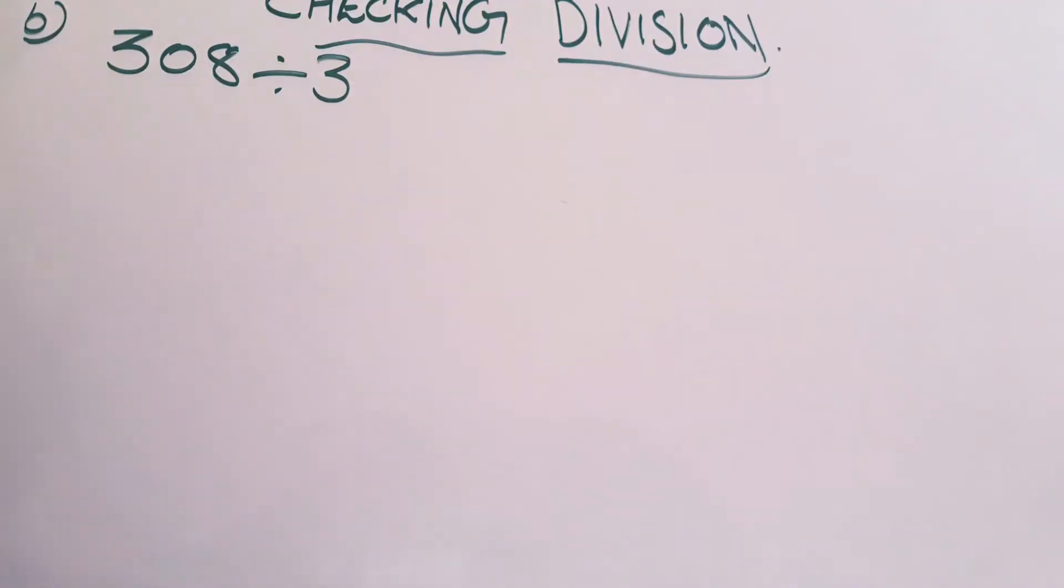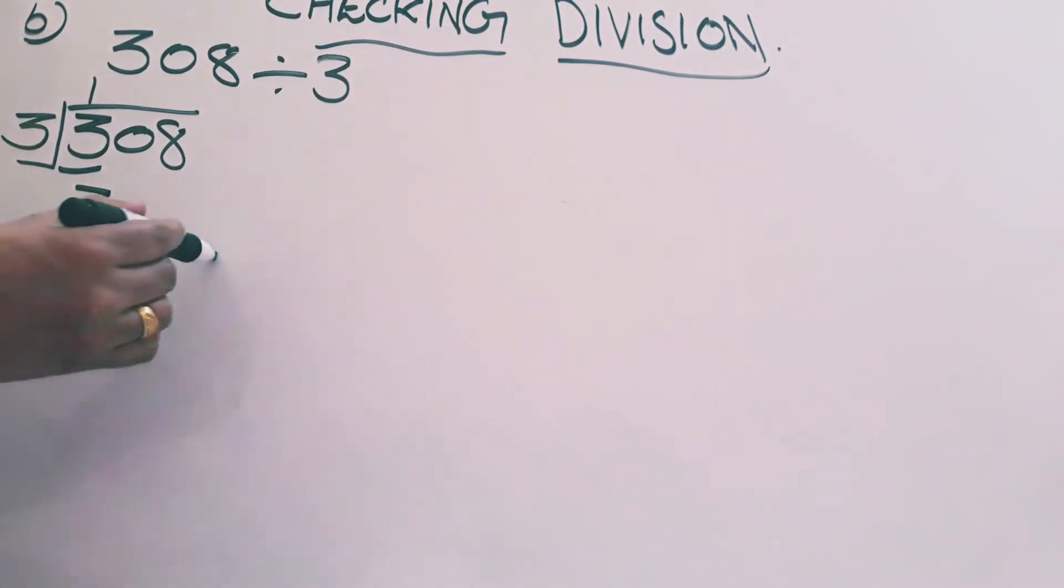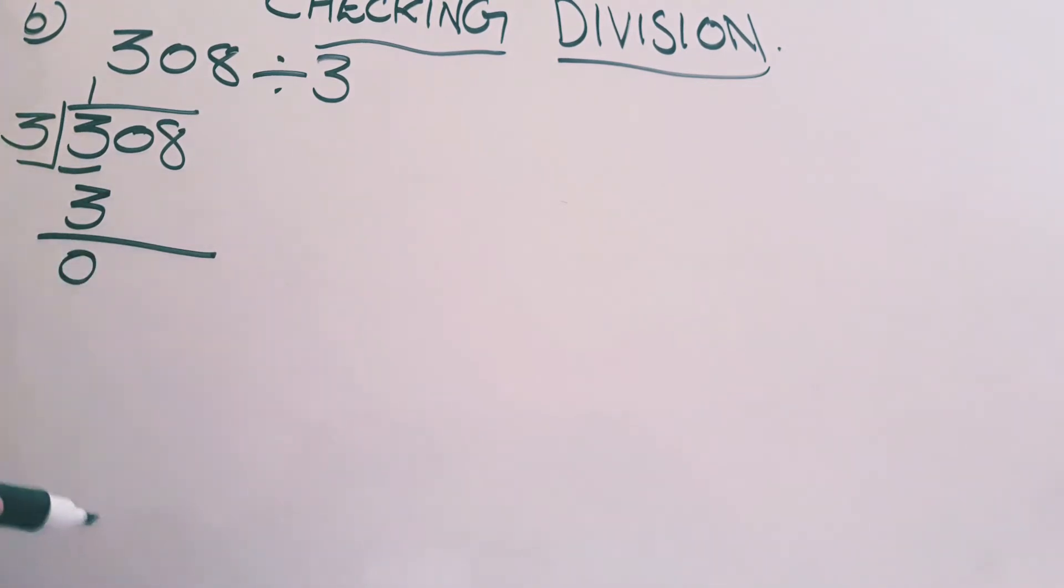Here is your question B. 308 divided by 3. Let's do long division first. Take first number in dividend, that is 3. In threes table, 3 is there. 1 threes are 3. Write 1 on the top of this 3. Multiply 1 into 3, 3. Write here. Underline. 3 minus 3 is 0.